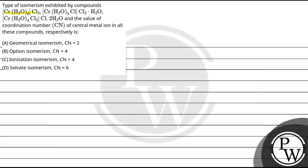The compounds are Cr(H2O)6Cl3, Cr(H2O)5Cl·Cl2·H2O, Cr(H2O)4Cl2·Cl·2H2O, and we need to find the value of coordination number of the central metal ion in all these compounds respectively.